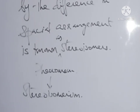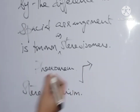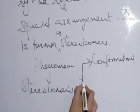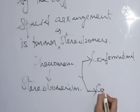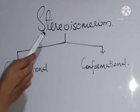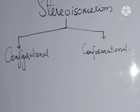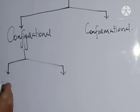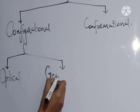Stereoisomers can again be divided into two types: the first is conformational isomers and the second one is configurational isomers. Then configurational isomers are again classified into two: the first one is optical isomers and the second one is geometrical isomers.